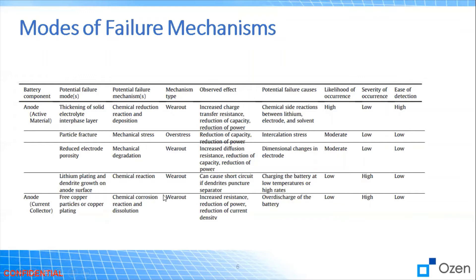Similar failure modes can happen to the anode current collector — in this case the copper part is responsible. Free copper particles or copper plating occur due to chemical corrosion reactions, which is a wear-out mechanism. This will increase resistance, reduce power, and reduce current density. Over time, this leads to over-discharge of the battery, which is obviously something we don't want.